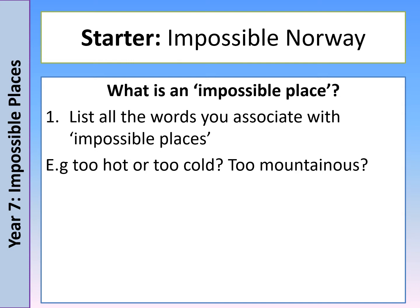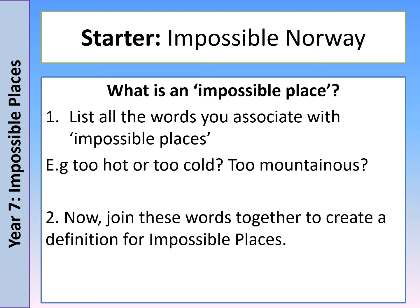This week we're going to start with Norway — impossible Norway. Once you've got all of your words, try and join them together to create a definition for what you think impossible places are. You might start by saying 'impossible places are places that...' and finish that sentence yourself. There's no right or wrong answer and no official definition — this is just something for you to think about. So pause the video here, have a go at these tasks, and then start the video again when you've finished.